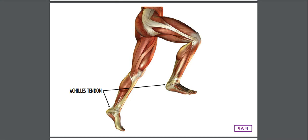Other good places to view your tendons in action: try looking at someone's neck as they turn their head. Can you find tendons in your arms or legs? The muscles in your legs are the largest and strongest skeletal muscles in your whole body.